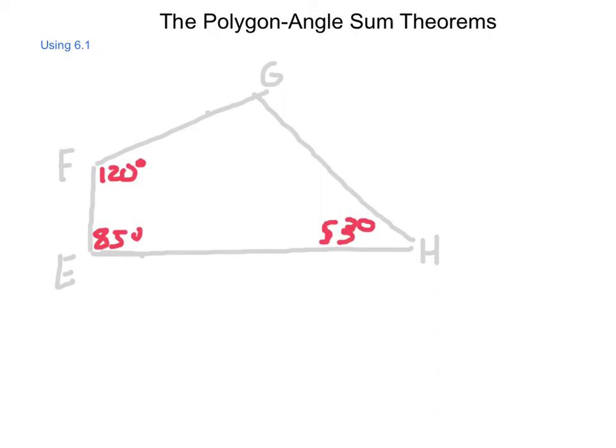So first thing we have to do is figure out what the angle sum would be. Since this is a quadrilateral, we go 4 minus 2 times 180. Well, 4 minus 2 is 2, so 2 times 180 gives us 360 degrees. Next, we're going to sum the angles that are inside here. So, 120 plus 85, those together will give us a total of 205. Then, to that, if we add the 53, we come out to a grand total of 258 degrees.